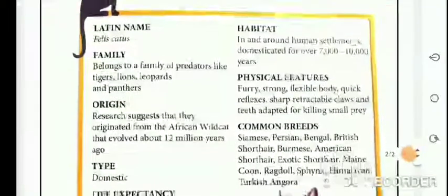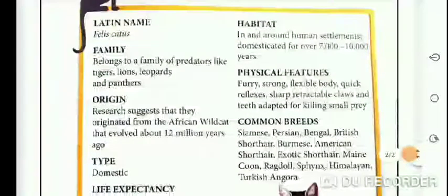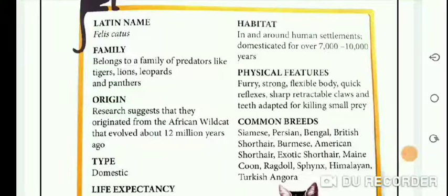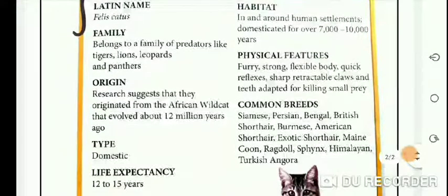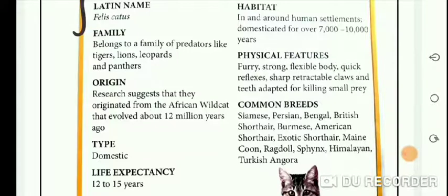Then it's habitat: in and around human settlements, domesticated for over 7,000 to 10,000 years. Physical features: furry, strong, flexible body, quick reflexes, sharp retractable claws and teeth adapted for killing small prey.